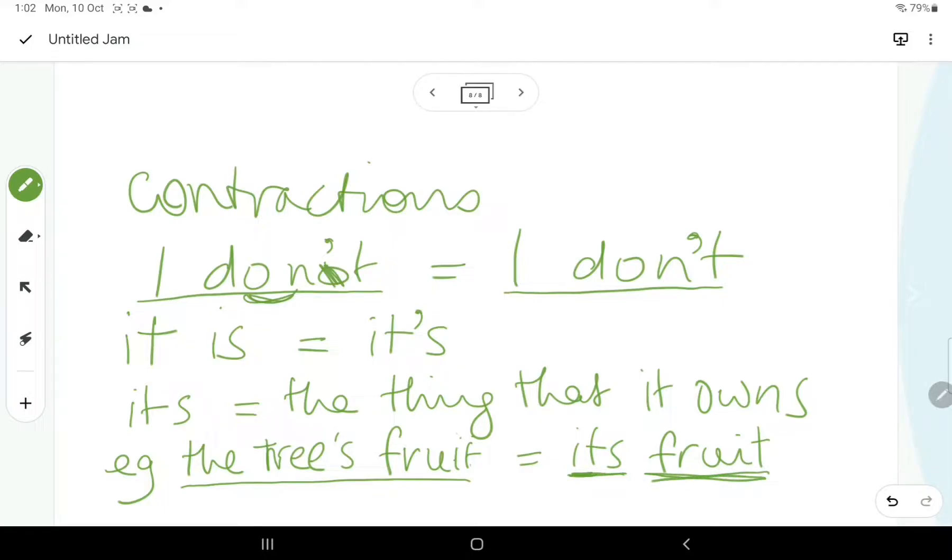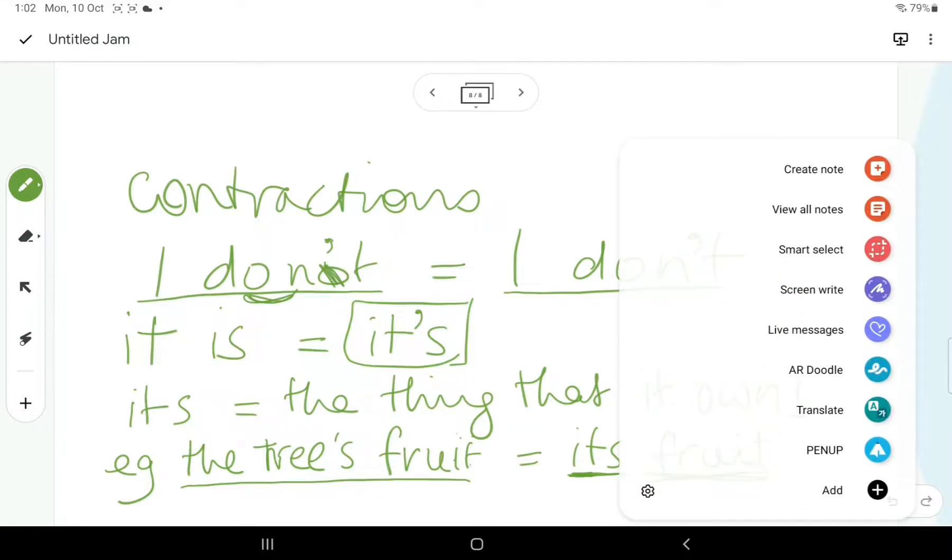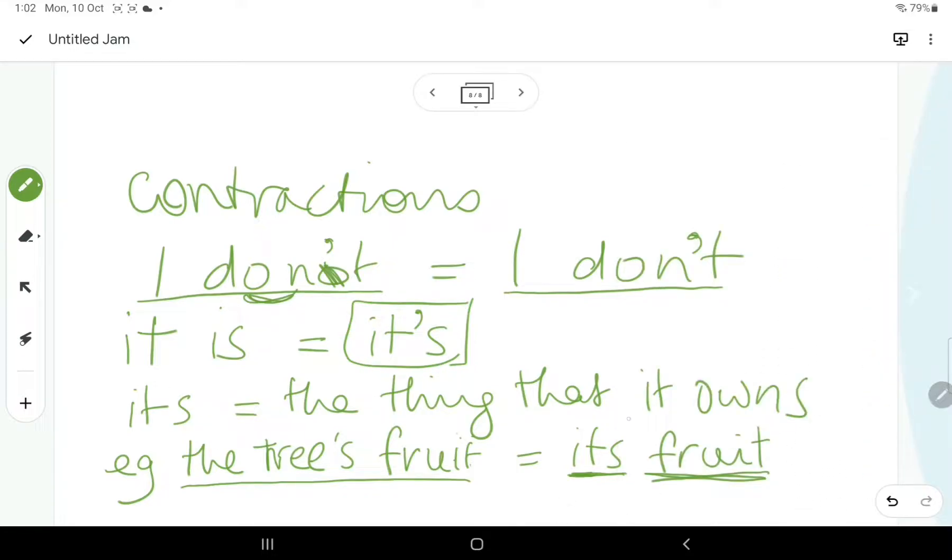So, that is one of the exceptions to the possessive rule, mainly to be able to save confusion. If it's got an apostrophe, it stands for it is. If it's got no apostrophe, it's a possessive type of it.